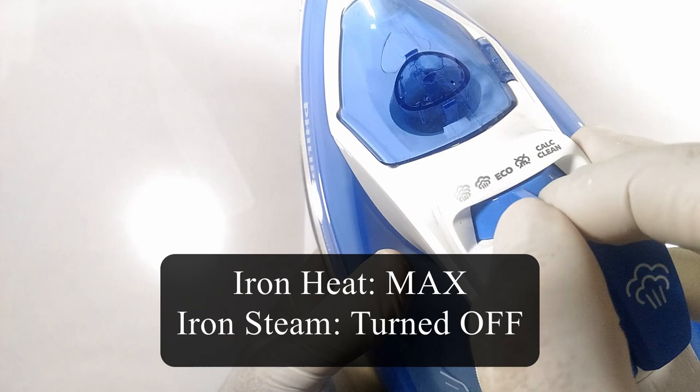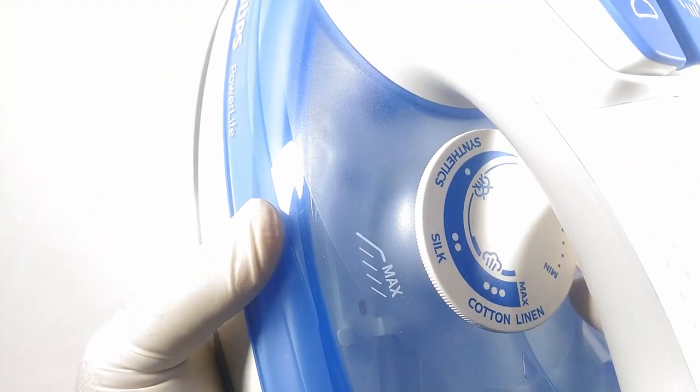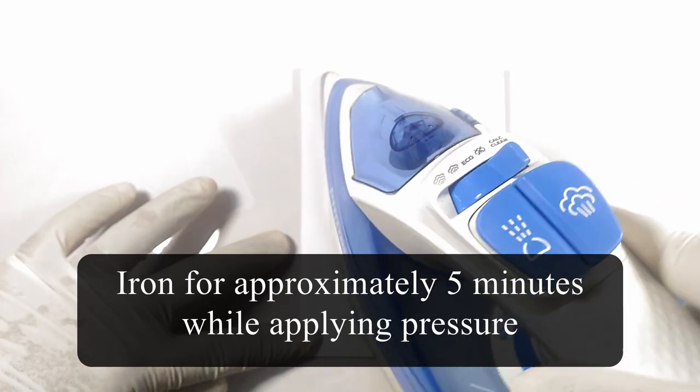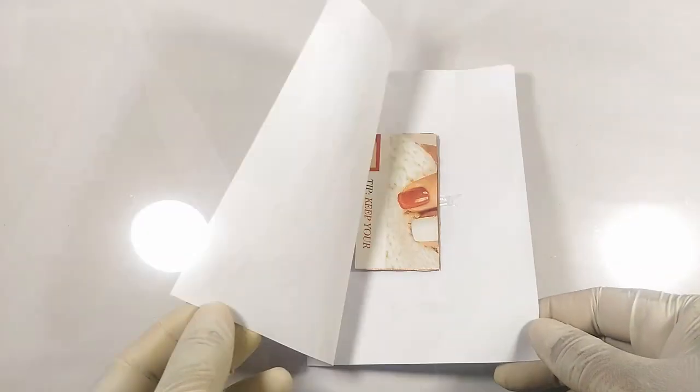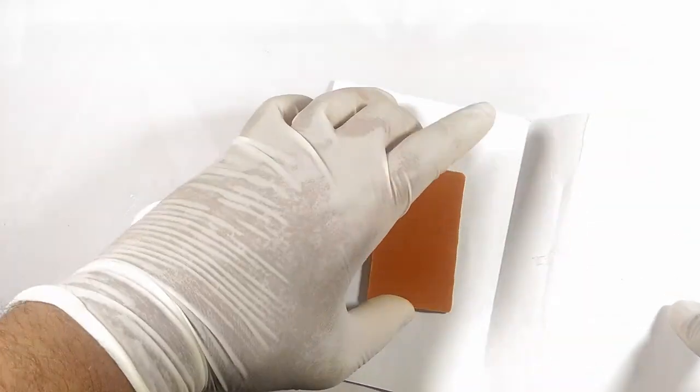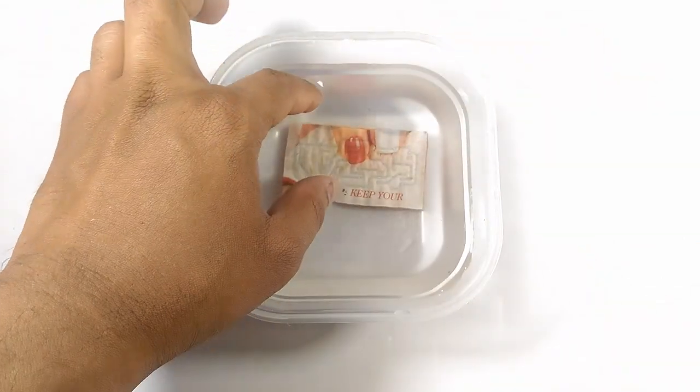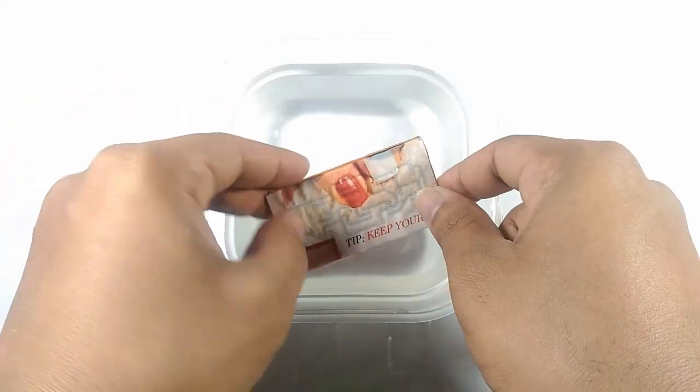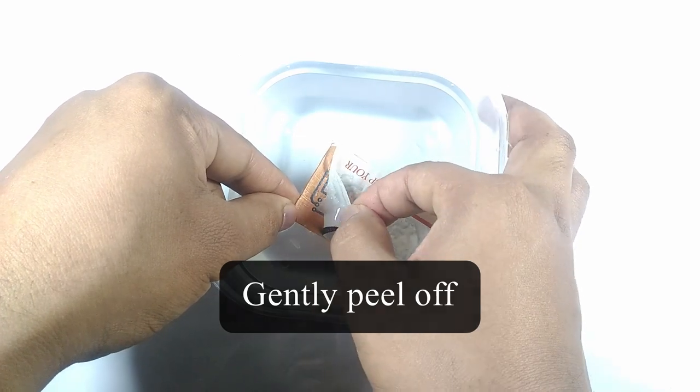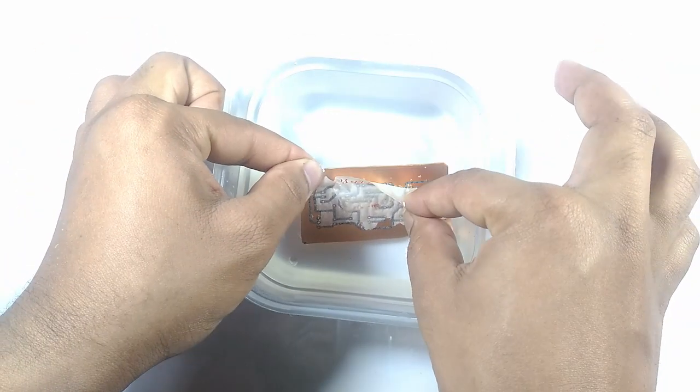The iron should be increased to the maximum heat and the steam turned off. I placed the iron on the side of the magazine paper and ironed it for approximately five minutes. I gently removed the copper board from the folded paper and placed it in water. Be careful it will be very hot. After letting the magazine paper soak up the water, I began to gently peel off the magazine paper from the copper board. Take your time when peeling it off.